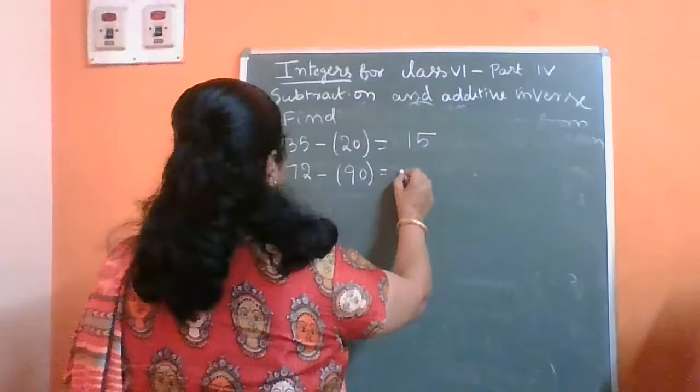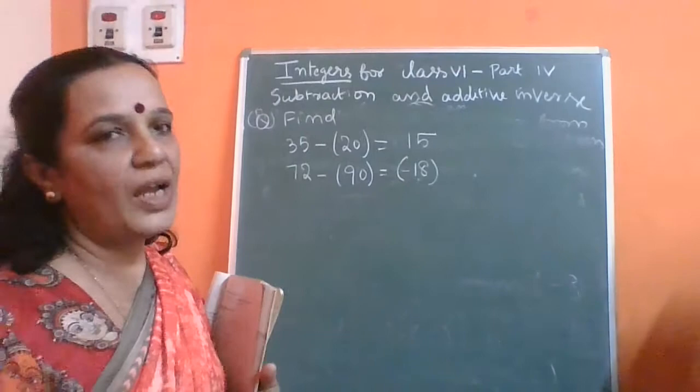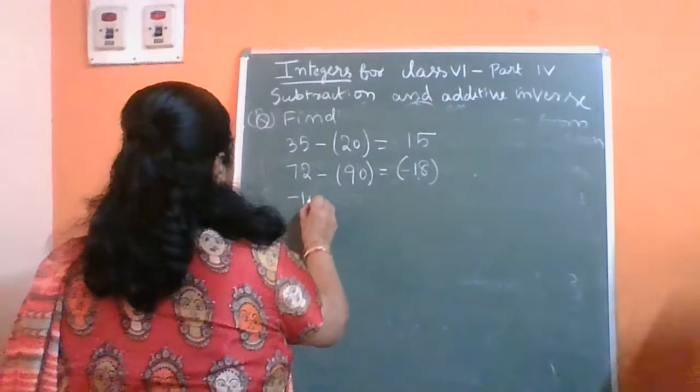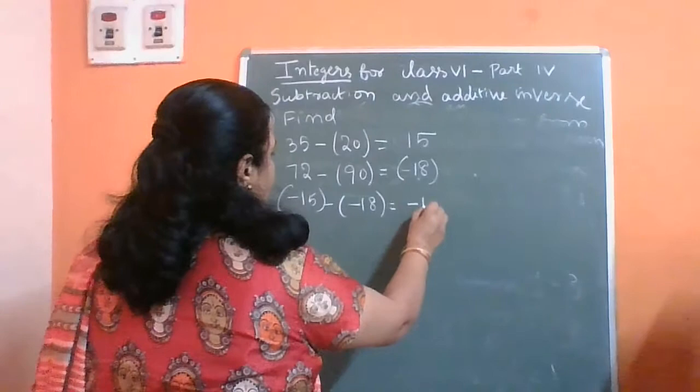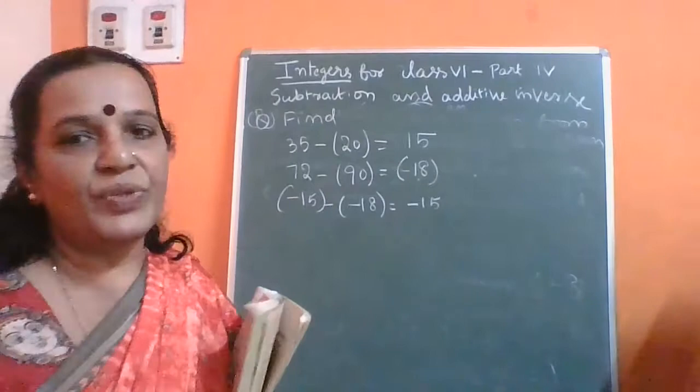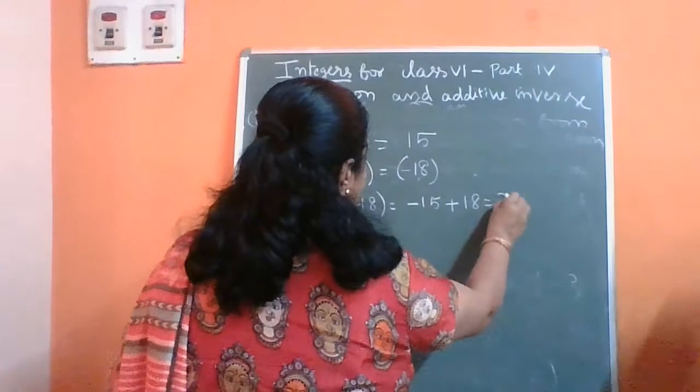The next question is minus 15 minus of minus 18. Write minus 15 as it is. Minus of minus is plus, so it becomes minus 15 plus 18, giving the answer minus 13.